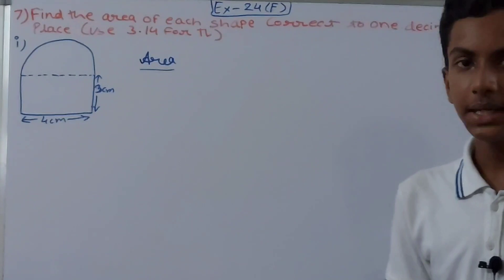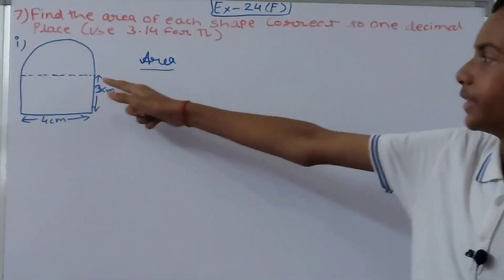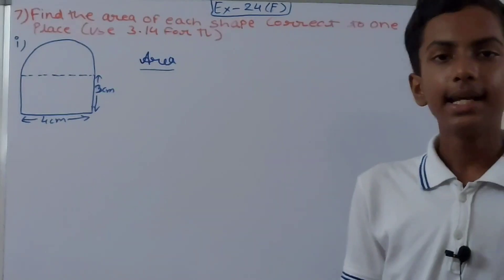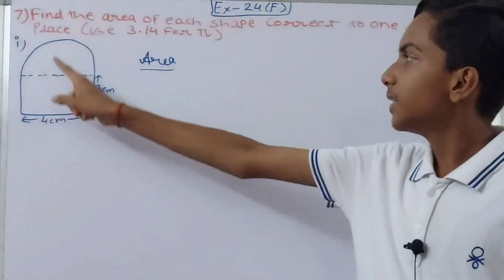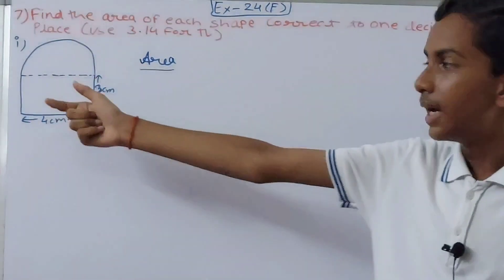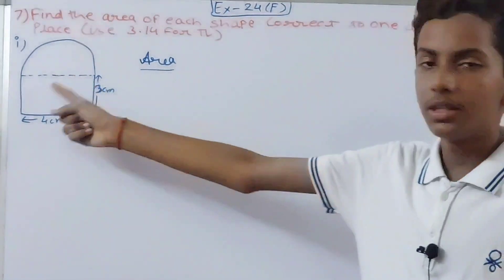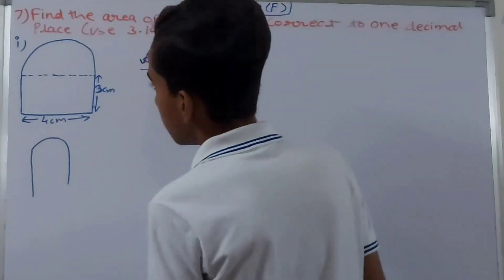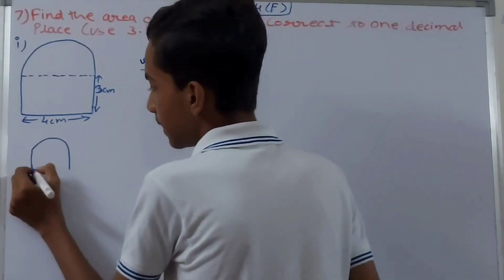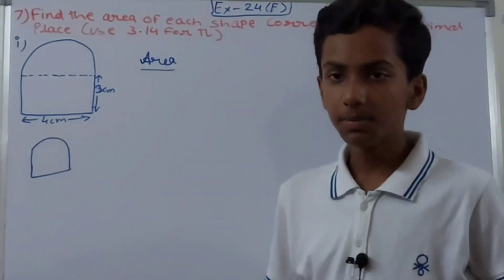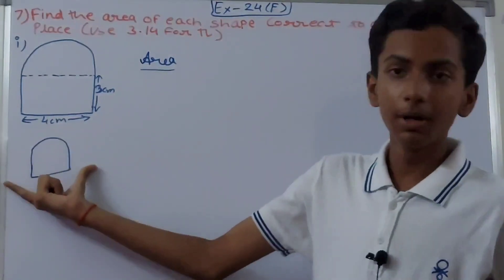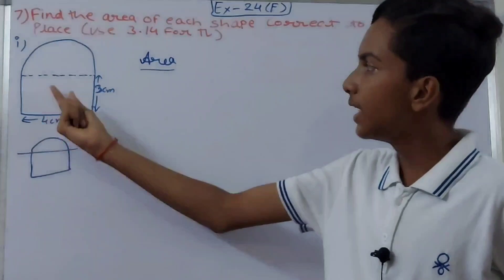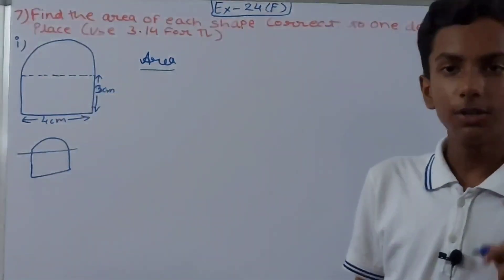You can see there is a dotted line passing through this figure in the middle of it. This line is dividing this figure into two different parts. The shape is without the dotted lines, but we cannot find the area directly for this figure by using any formula. That is why a dotted line has been made through it, which is dividing this into one rectangle and one semicircle.